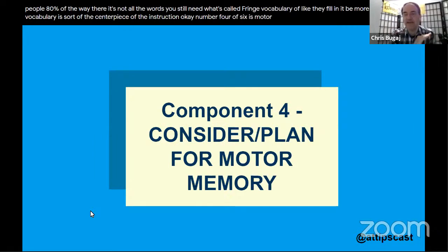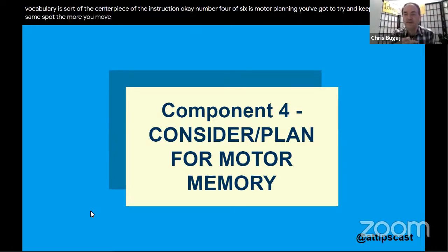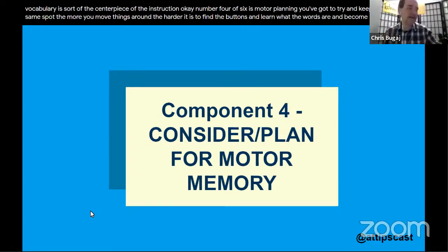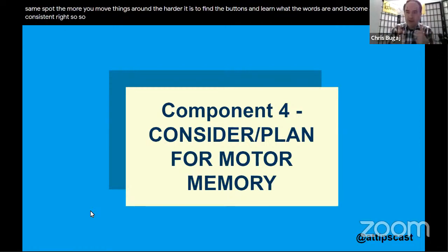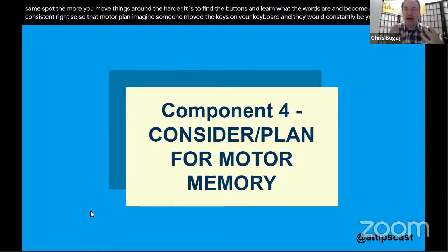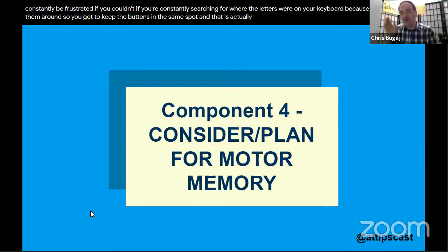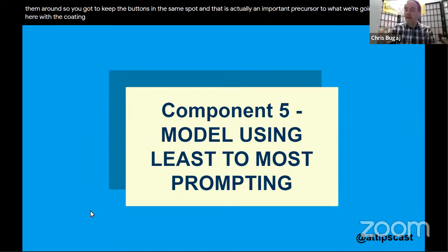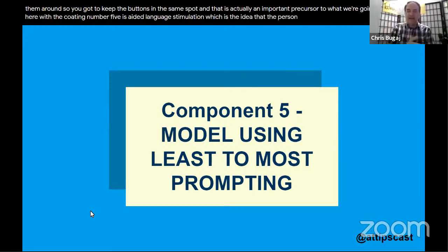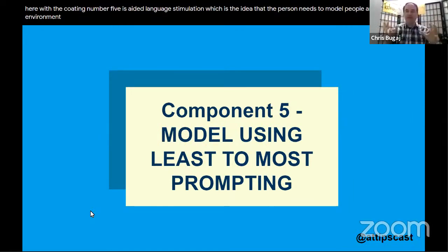Core belief number four is motor planning — you have to keep the cells in the same spot. The more you move things around, the harder it is to find the buttons, learn what the words are, and become automatic and consistent. Imagine if someone moved the keys on your keyboard — you'd constantly be frustrated searching for letters. Keeping buttons in the same spot is actually an important precursor to what we're going to talk about with coding.